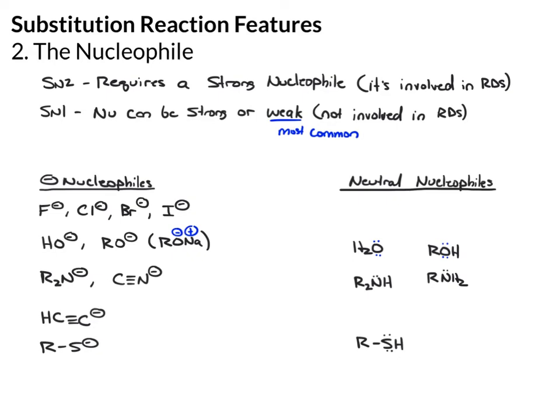Don't think of this as a huge list to memorize. Just keep in mind: something with a negative charge is generally a negatively charged nucleophile, and something with a lone pair is generally going to be a neutral nucleophile. Notice that with these neutral nucleophiles, we do have protons on the atom with a lone pair, because after it adds, we have to lose that proton — and we'll see that when we do some examples.